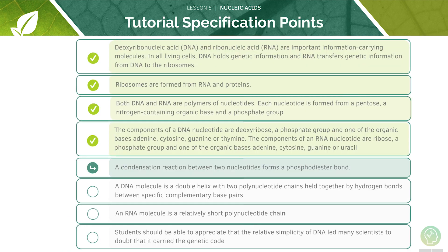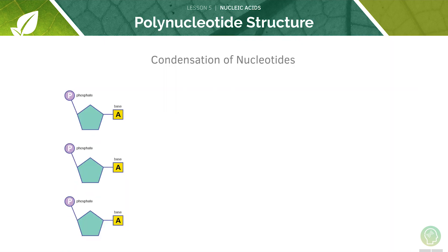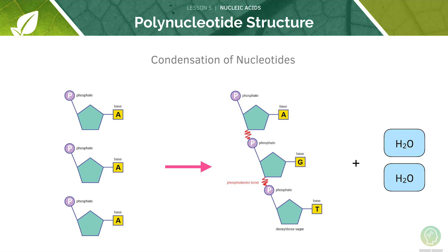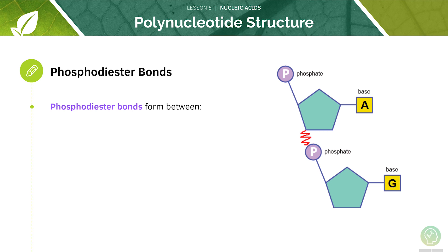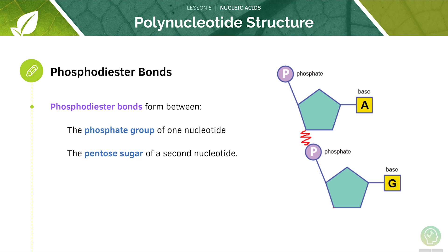Now we'll look at condensation reactions. Multiple nucleotides bonded together can form polynucleotides. This occurs through condensation reactions in which water is released as a byproduct. A water molecule is released every time a phosphodiester bond is made — so in this case we will release two water molecules as we've made two bonds. Phosphodiester bonds form between the phosphate group of one nucleotide and the pentose sugar of a second one — these are covalent bonds.